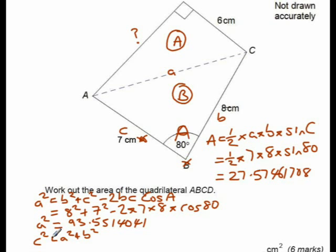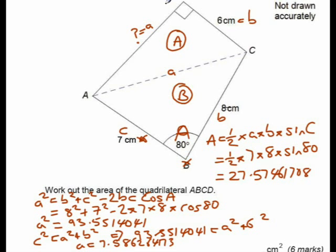So, using that, I have the C squared, which is this number I've got here, 93.5514041 equals A squared plus B squared. Now, for that, I'm going to call this A and this B. So, then I get A squared plus 6 squared. 6 squared is 36. I need to take it away from this side and then find the square root to get A. So, the A for this, if I type all that into a calculator, I'll get 7.586264173 and then I can use that to find the area of this triangle.